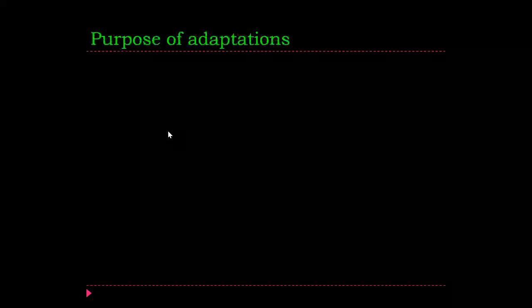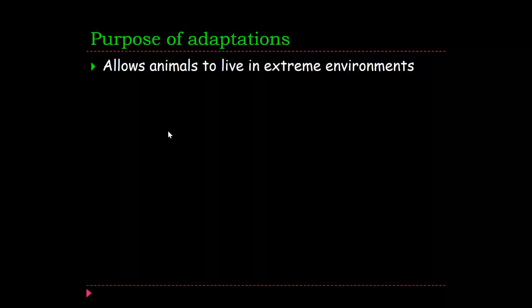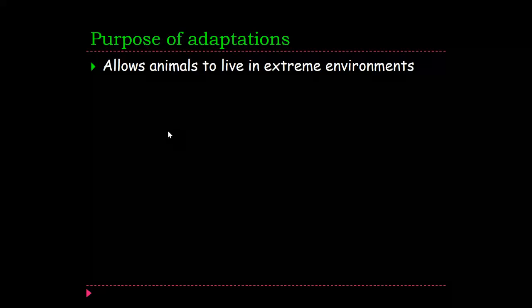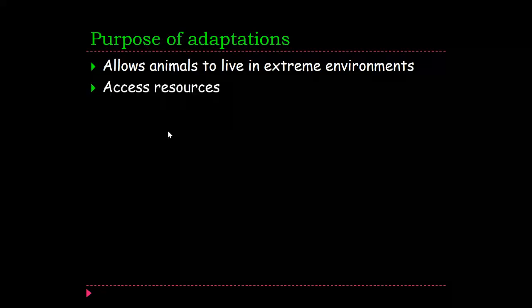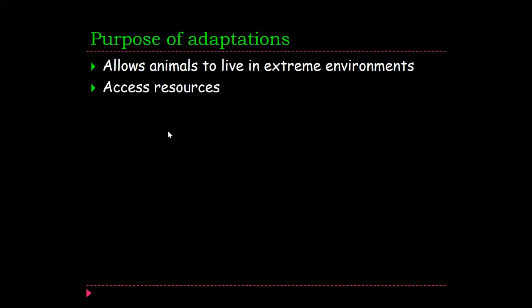So, why do they adapt? Why do they need to adapt? Animals live in extreme environments sometimes. There are little microorganisms that live on vents at the bottom of the ocean — not a drop of sunlight gets anywhere near there — but they live on those vents and are able to do chemosynthesis to survive. Access to resources and being able to access nutrients is incredibly important, and animals will adapt in order to make that easier for themselves. Reproduce — if you can't reproduce, you can't survive. Simple.